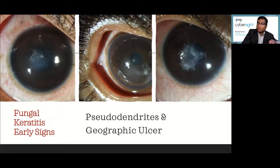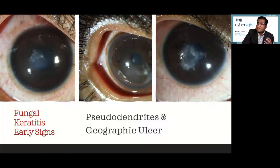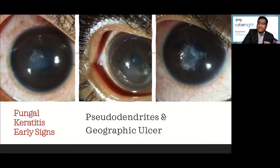In early fungal keratitis, always try to differentiate from HSV dendrites. There is no harm in debriding both lesions — if it is HSV, debridement is a useful tool; if it is fungal keratitis, debridement reduces the load of fungal organisms from the cornea. The classical picture that typically presents after treatment by a local medical shop shows feathery margins and satellite lesions. Sometimes you see a superficial pigmented plaque, which is pathognomonic of infection with dematiaceous fungi.